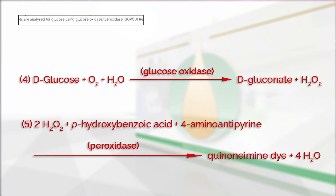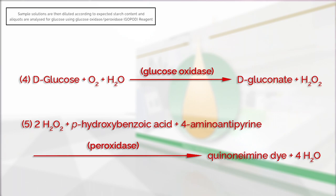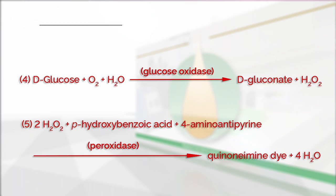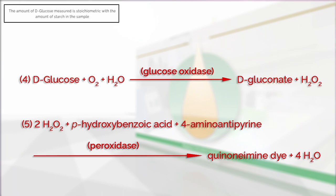Sample solutions are then diluted according to expected starch content, and aliquots are analysed for glucose using glucose oxidase peroxidase GOPOD reagent. The amount of glucose measured is stoichiometric with the amount of starch in the sample.